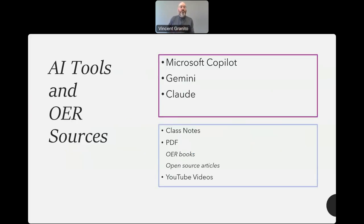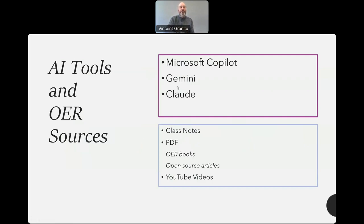The different types of AI tools I'm going to talk about today are Microsoft's Copilot, Gemini (which is Google's AI tool), and Claude. We could also use ChatGPT, but I'm going to keep it to these three, and use them specifically with a set of class notes, PDFs — either an OER book or some type of open source article — and then YouTube videos.